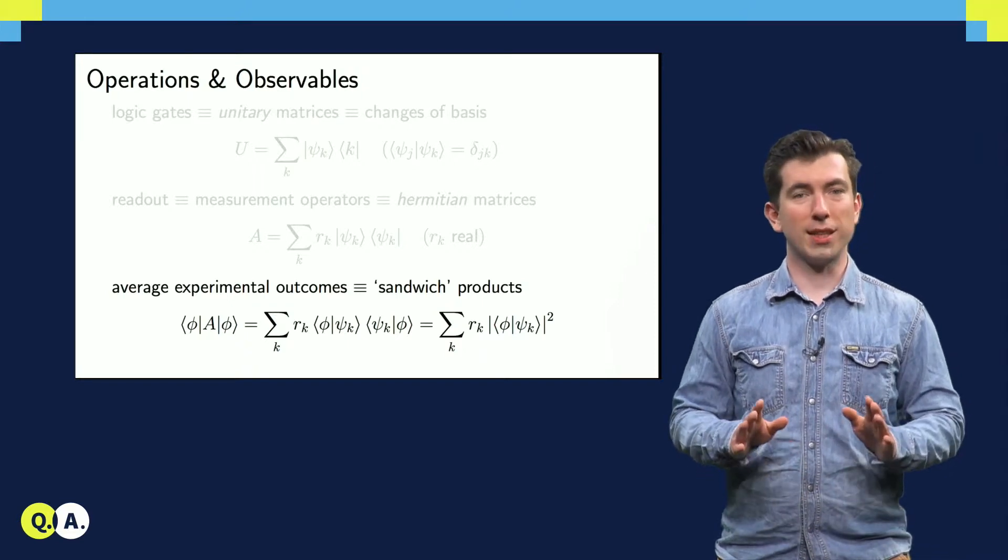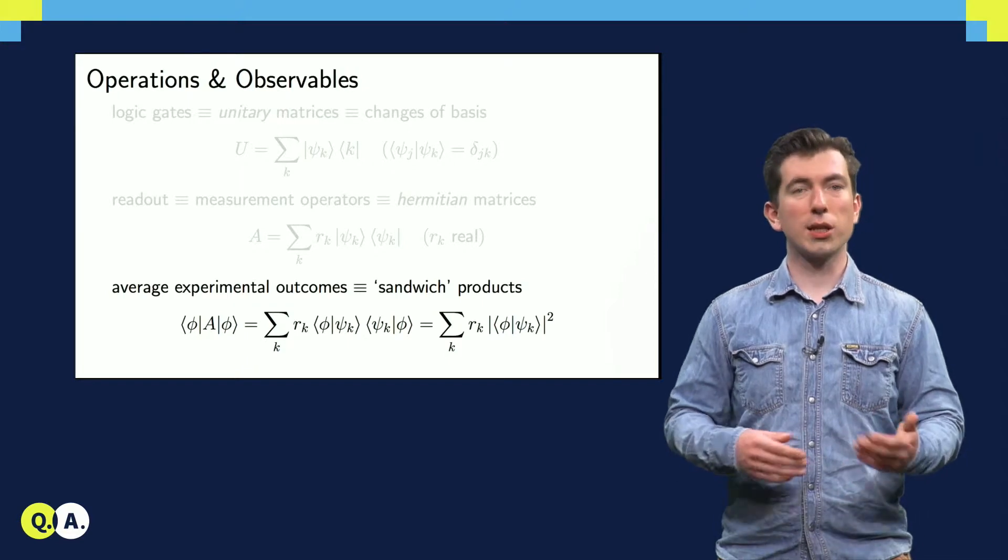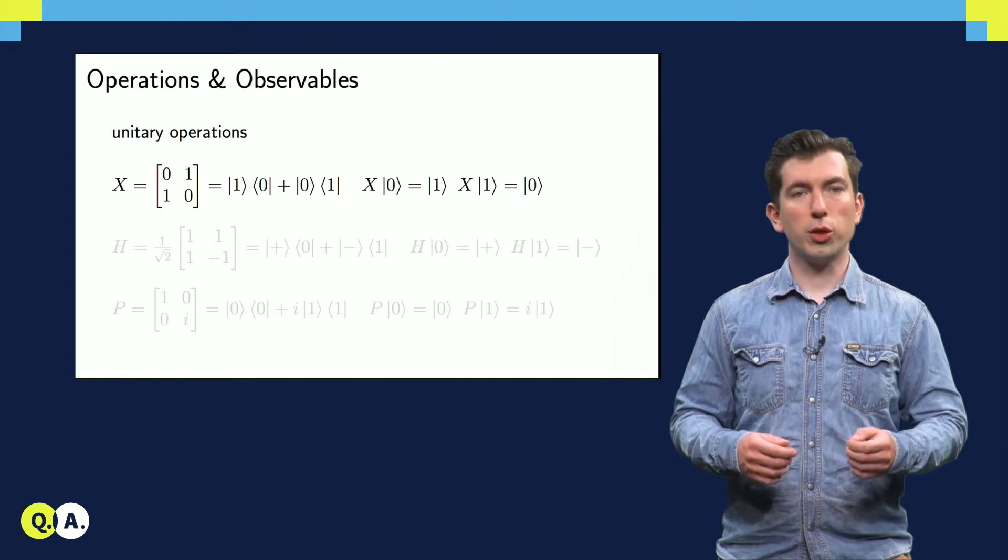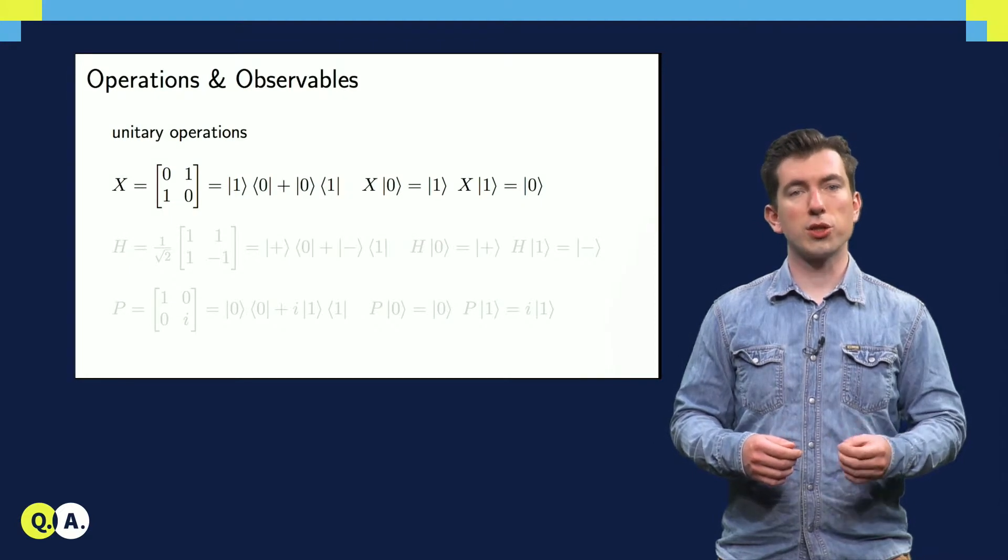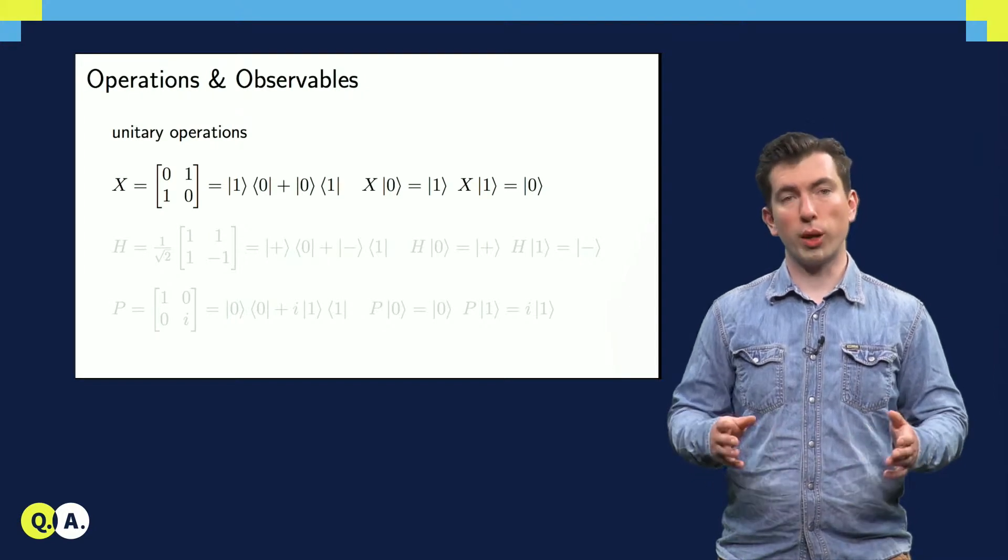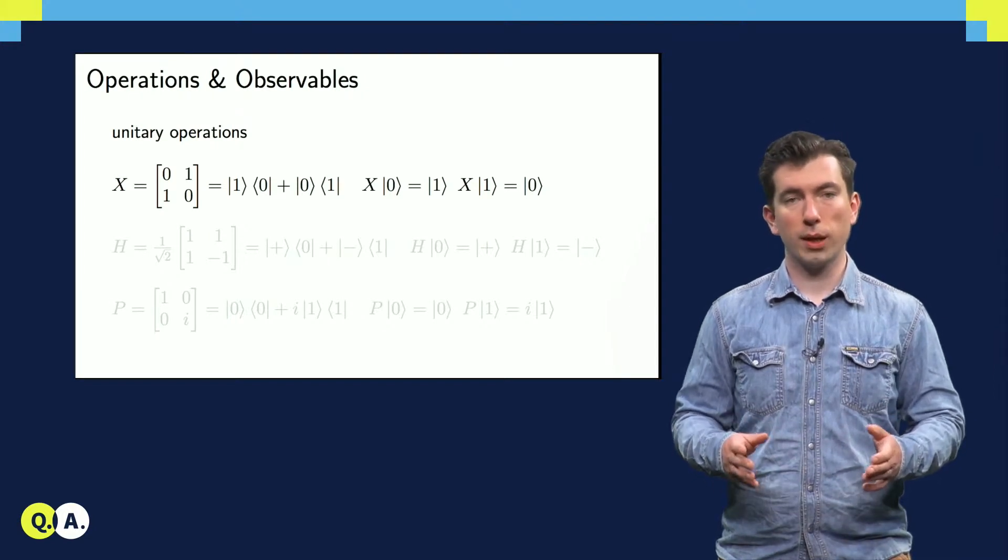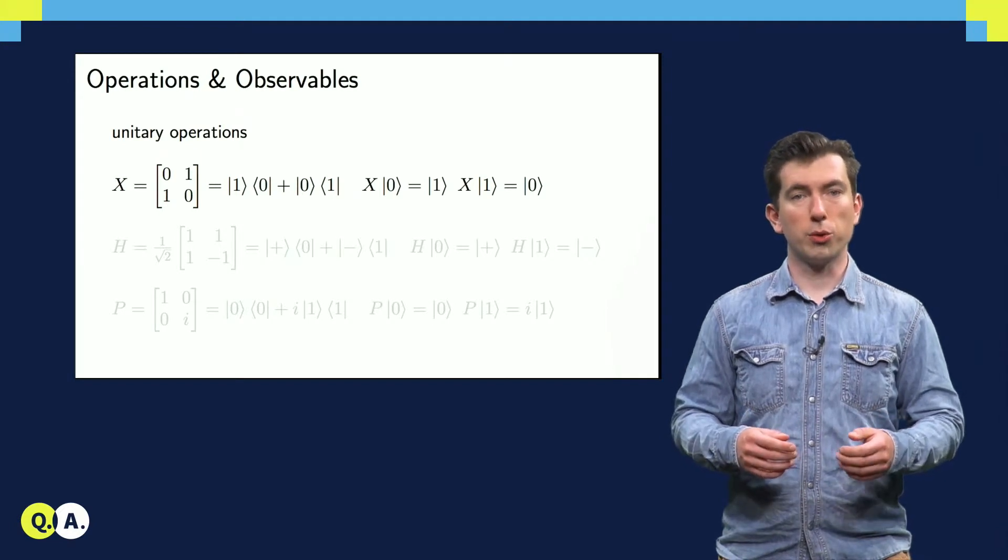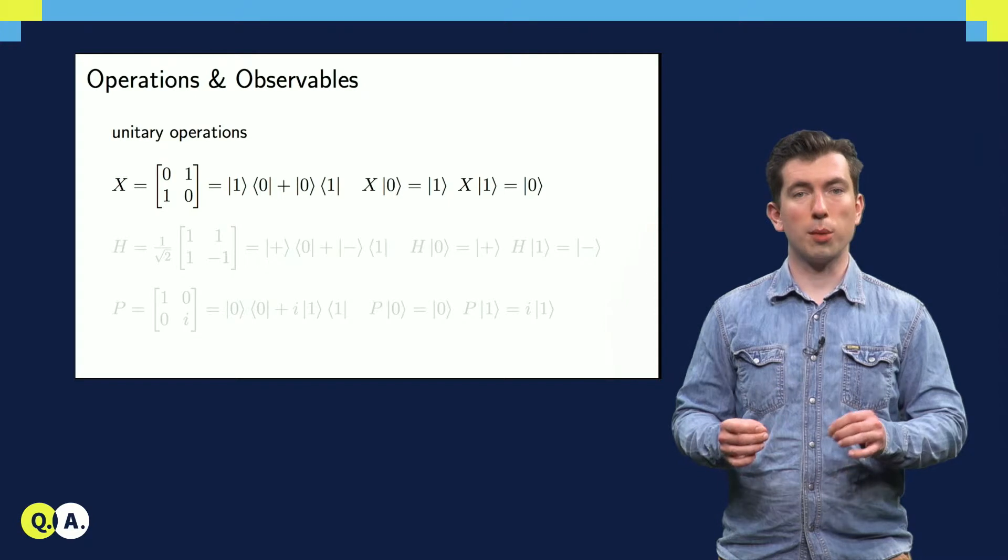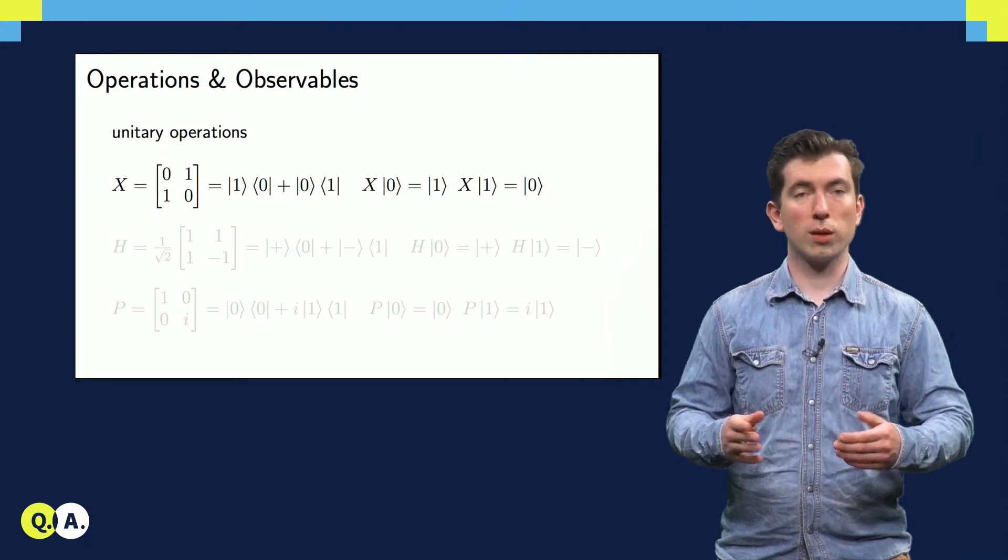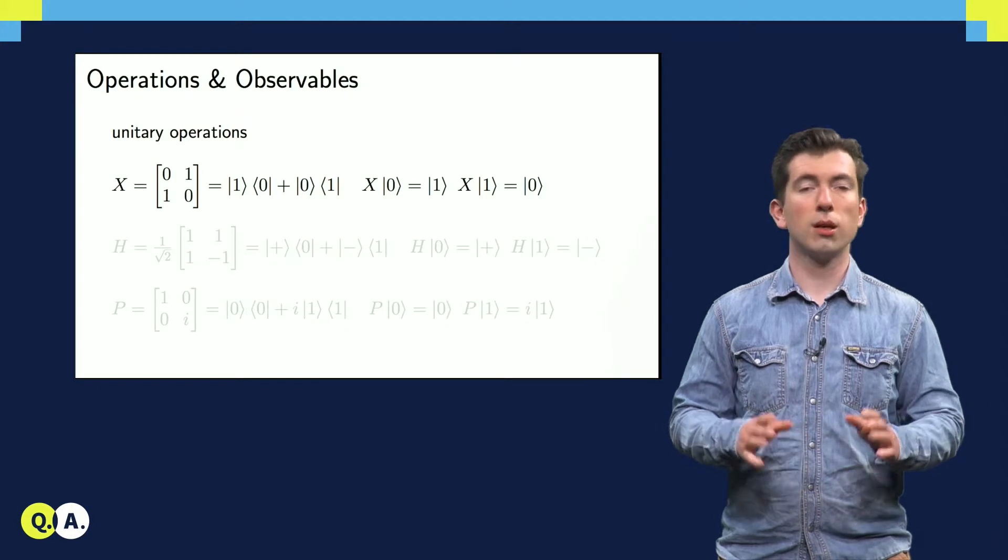Now this is probably a lot to take in all at once, so let's take a look at a few examples. Here, we have a unitary operation that exchanges states in the computational basis, which we call x, or the Pauli x, if you're already familiar with Pauli matrices. Here it's decomposed into ket-bra terms, and here's what happens when we use it to transform one of the computational basis states. We just get the other state: 0 goes to 1, and 1 goes back to 0. Not so exciting.